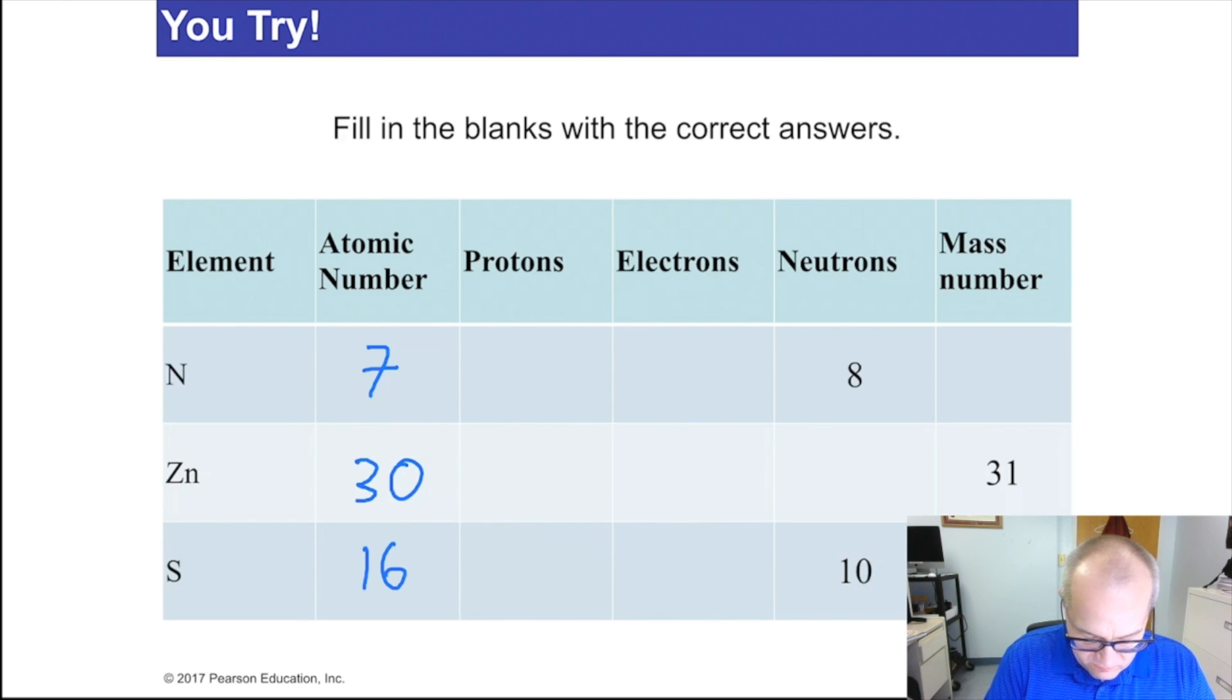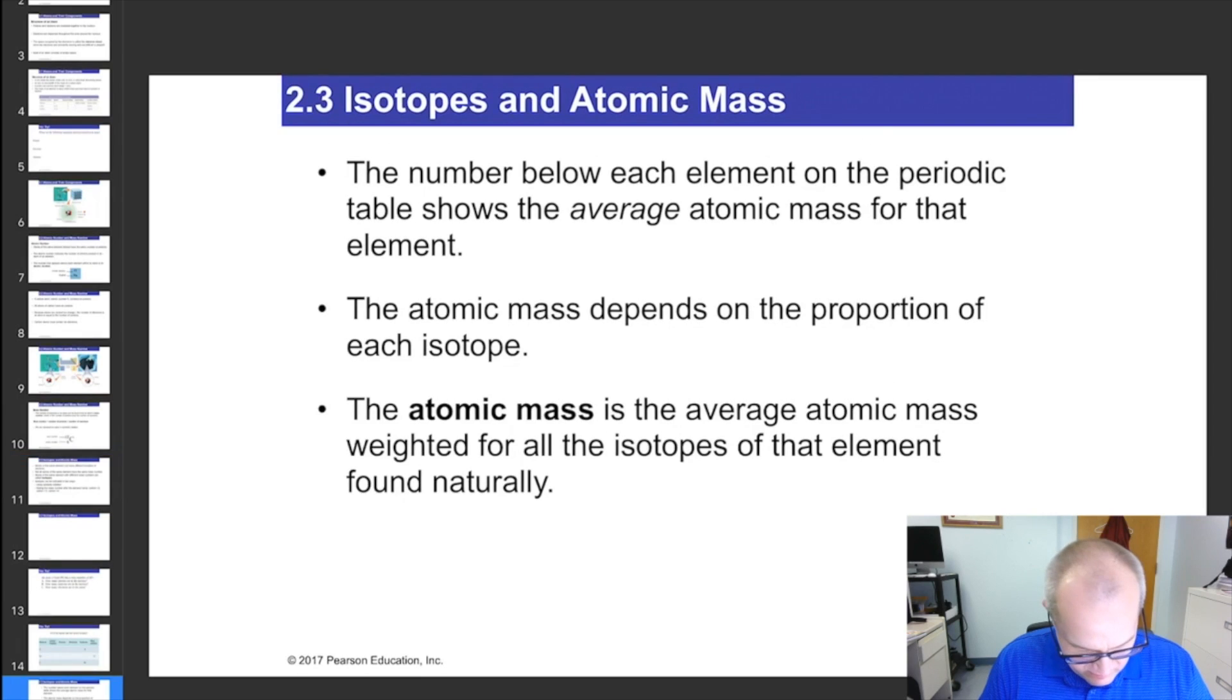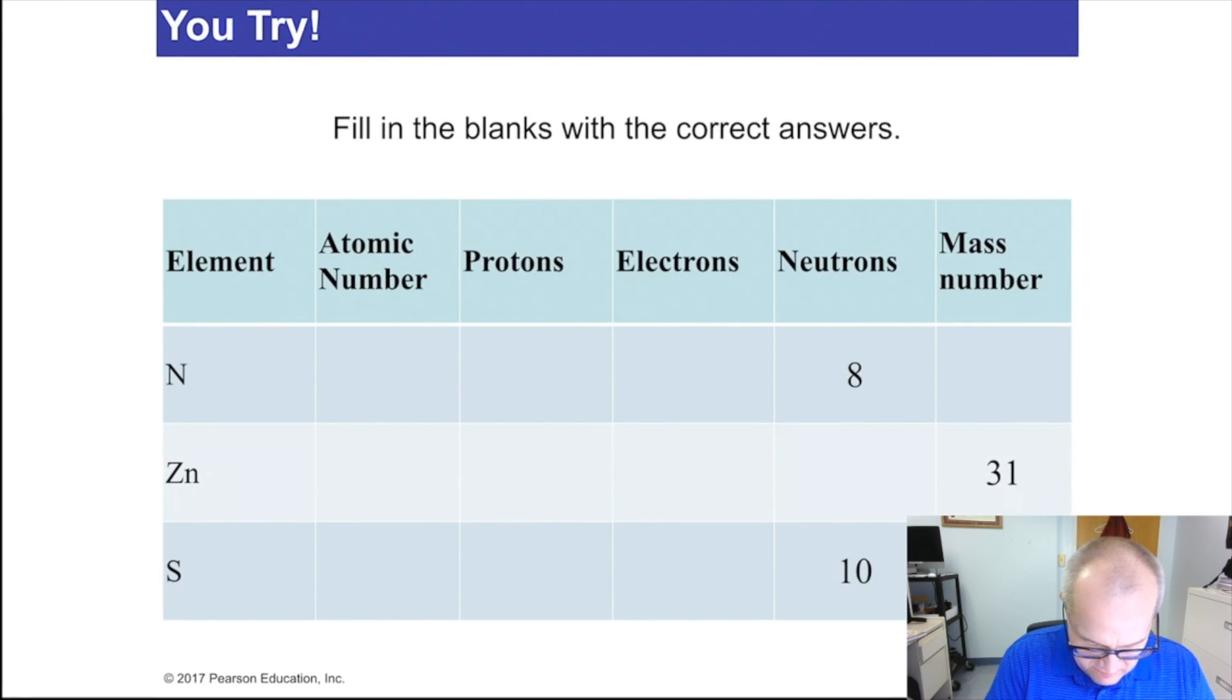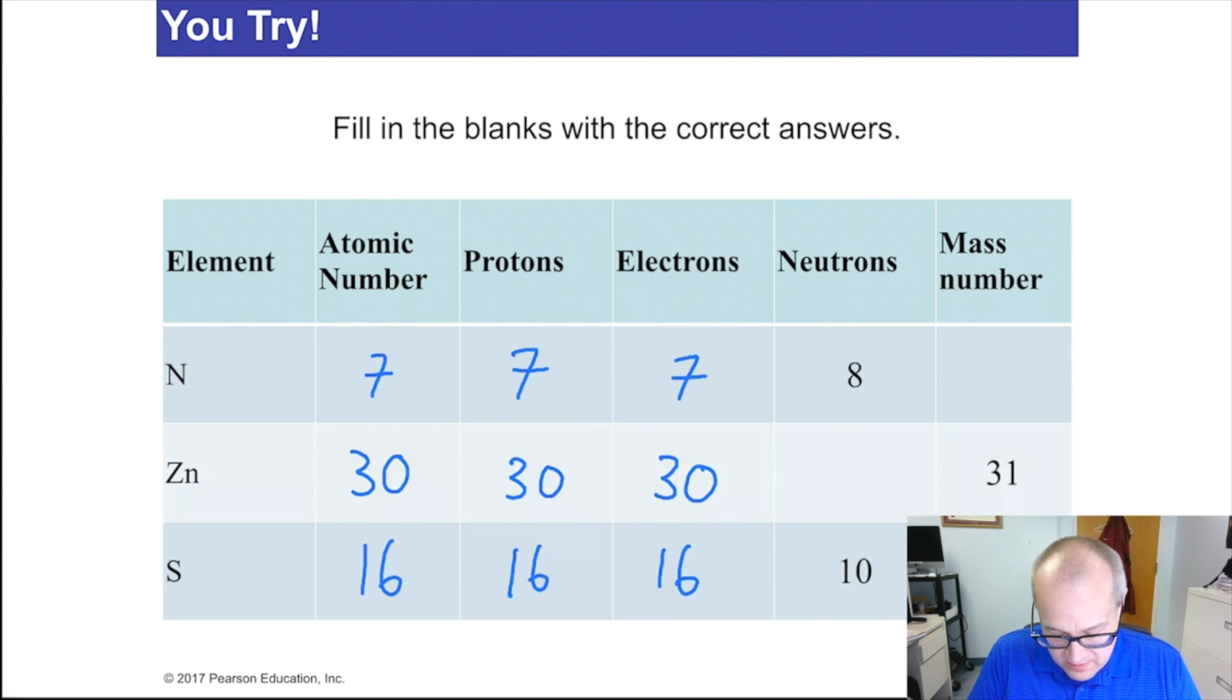I just looked those up in the periodic table. So that means the number of protons are 7, 30, and 16. Remember, the atomic number is the number of protons. Electrons are 7, 30, and 16. How can I be so confident? I know that the number of protons equals the number of electrons in an atom. So they're equal.